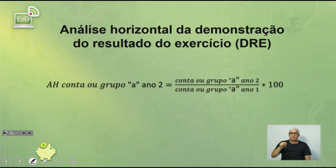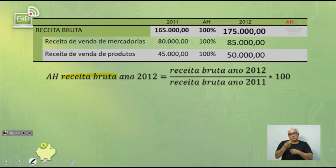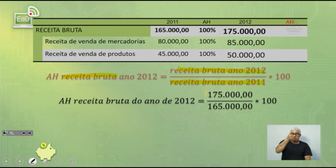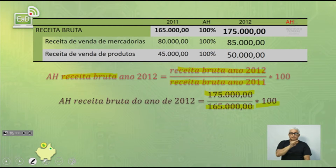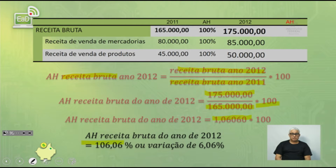Análise horizontal da DRE: mesma fórmula — conta ou grupo A do ano 2 dividido pela conta ou grupo A do ano 1. Exemplo: receita bruta de 2012 (175.000) dividido por receita bruta de 2011 (165.000), vezes 100 = 106,06%, ou uma variação de 6,06%.